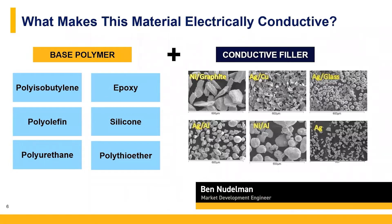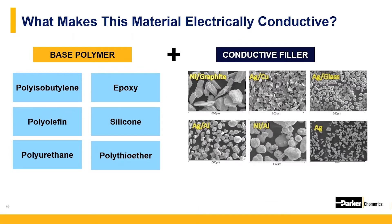To start, let's get into some of the basics of what makes up a conductive sealant or adhesive. In most cases, there are two main components: a base polymer or binder and an electrically conductive filler. The binder accounts for many of the physical properties of the compound, such as adhesive strength, flexibility, and working life. The conductive filler consists of a metallic particle blended into the polymer to give the compound its electrical conductivity and EMI shielding properties.